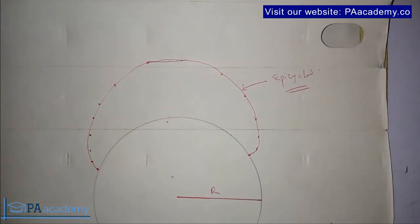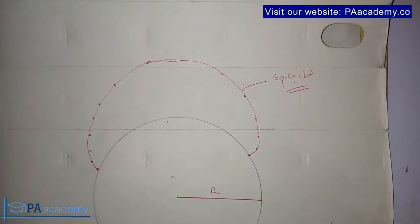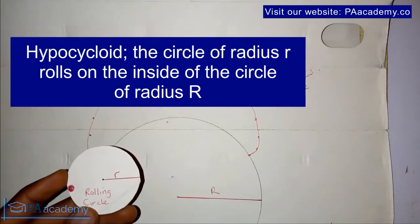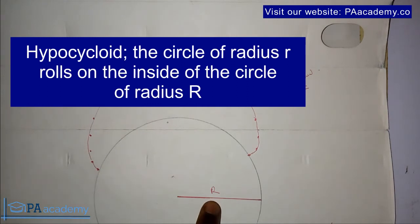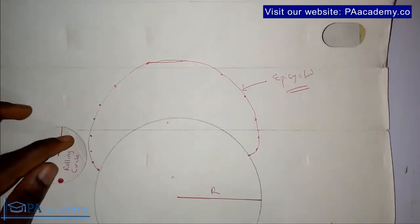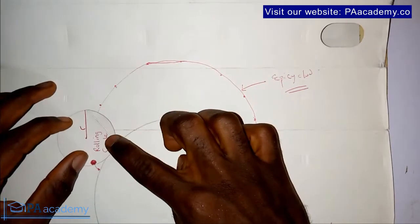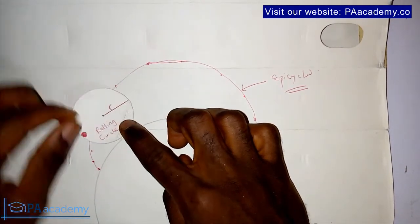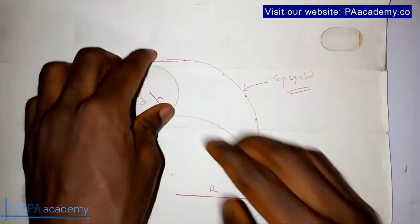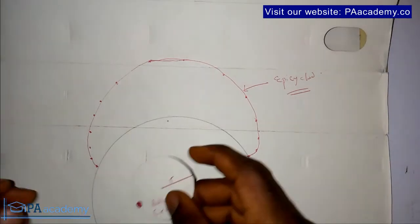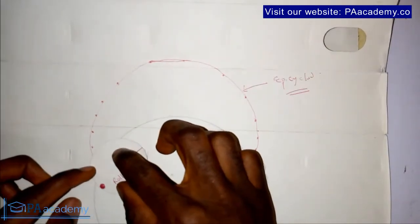I'm still going to look at this in terms of drawing — I have some drawings I'll be showing you, so make sure you watch to the end for a full understanding. I'll also be giving you some tips when it comes to drawing epicycloid and hypocycloid. Now let's look at hypocycloid in terms of definition. The rolling circle of radius r rolls on the inside of the circle with radius capital R. Unlike epicycloid where the circle rolls on the outside, this time the rolling circle is on the inside.